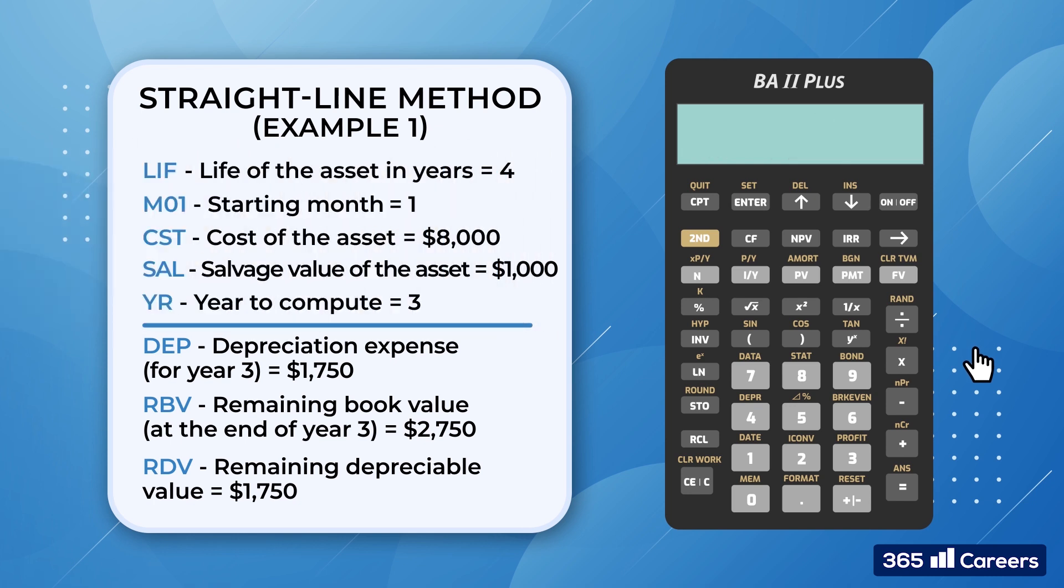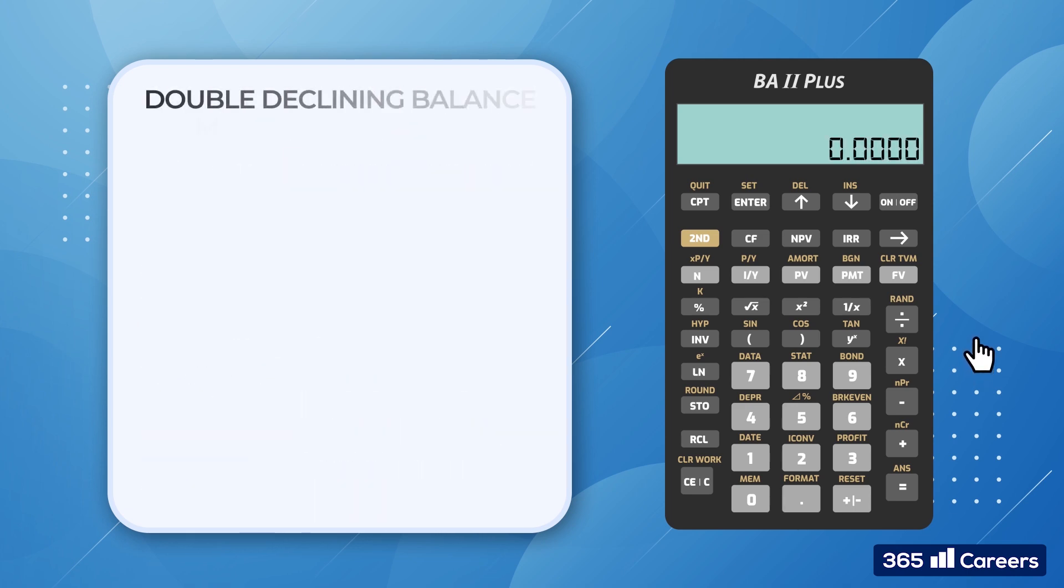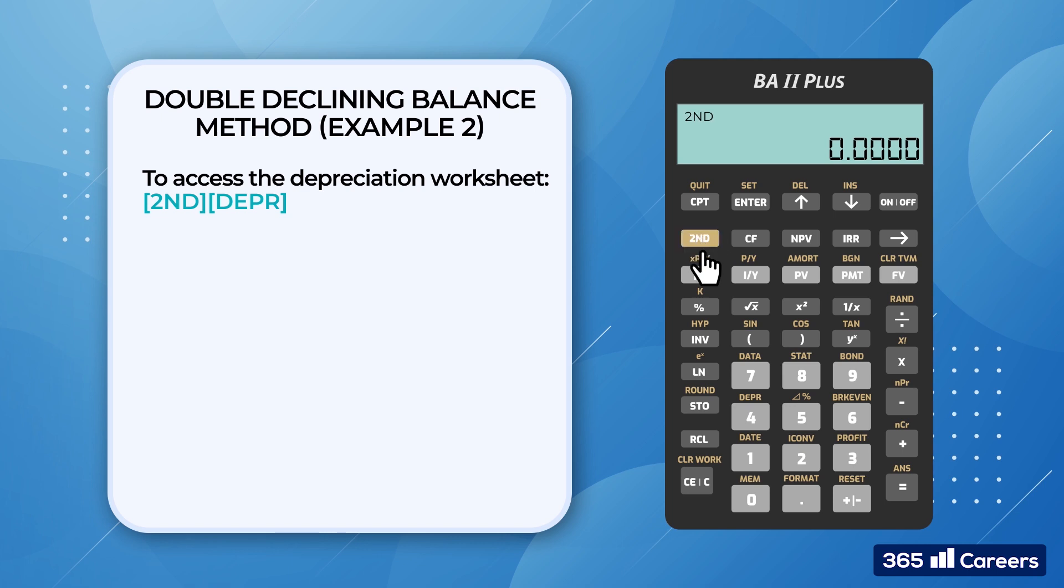Alright, let's demonstrate how this works with the accelerated depreciation method, the double declining balance method. To do that, we press second depreciation, followed by second set until we find DB standing for declining balance method.